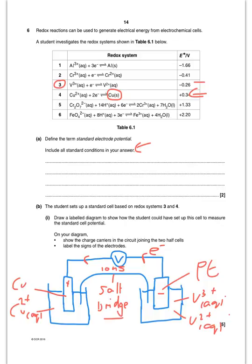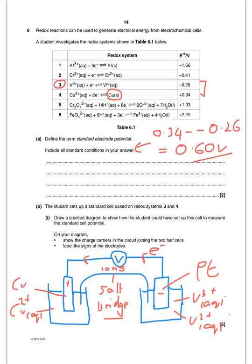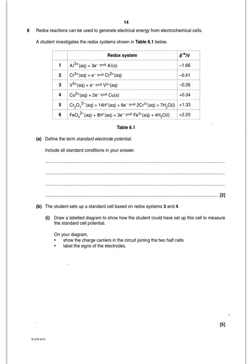For the next question they want me to give the potential. The potential is the difference between the two readings, so it would be 0.34 minus (−0.26), giving a cell potential of 0.60 volts.